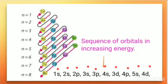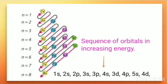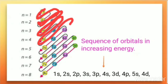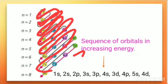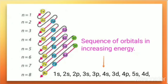To remember this sequence, use the mnemonic diagram where all s orbitals are in one line, all p in one line, all d in one line, and all f in one line. Then draw diagonal lines to get the sequence: after 1s comes 2s, then 2p, then 3s, then 3p, 4s, then 3d, 4p, 5s, and so on. This diagram helps you build the sequence needed to write electronic configurations for any element.